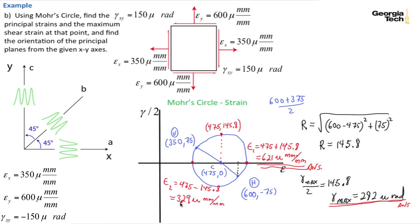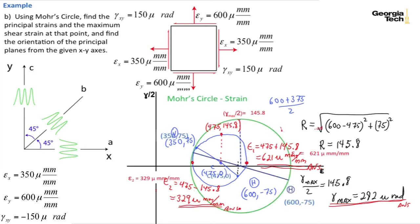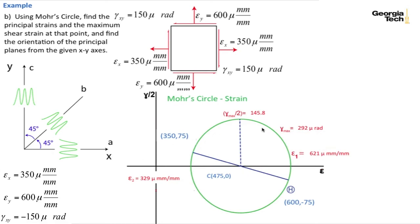That's our other principal strain. And so that's a good Mohr circle for strain. Here I've gone ahead and plotted it out so that it's much cleaner and easier to see.